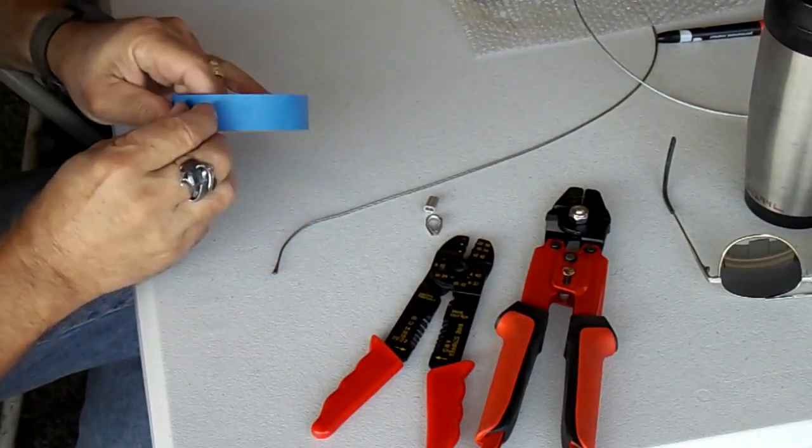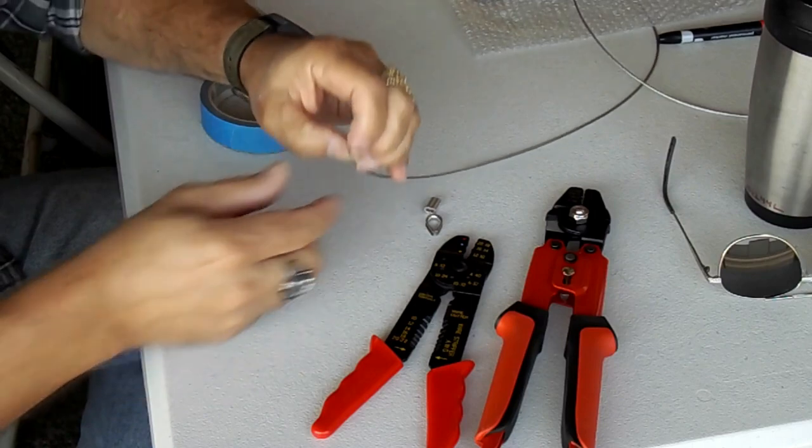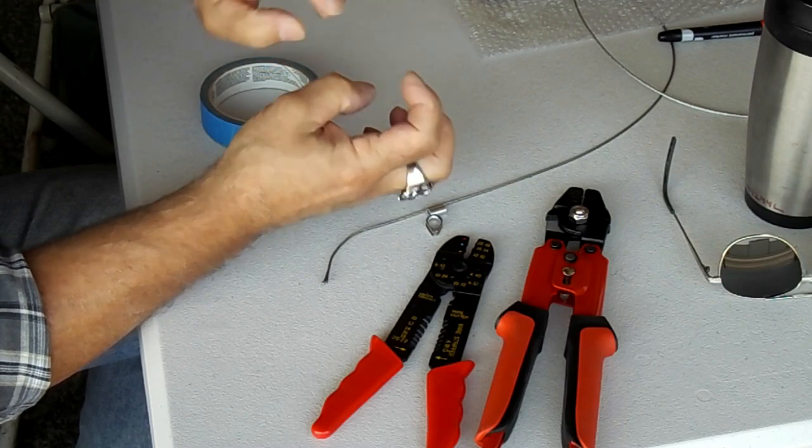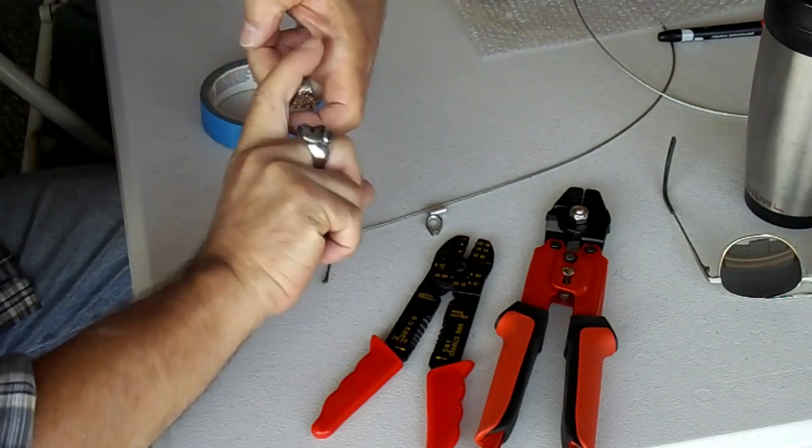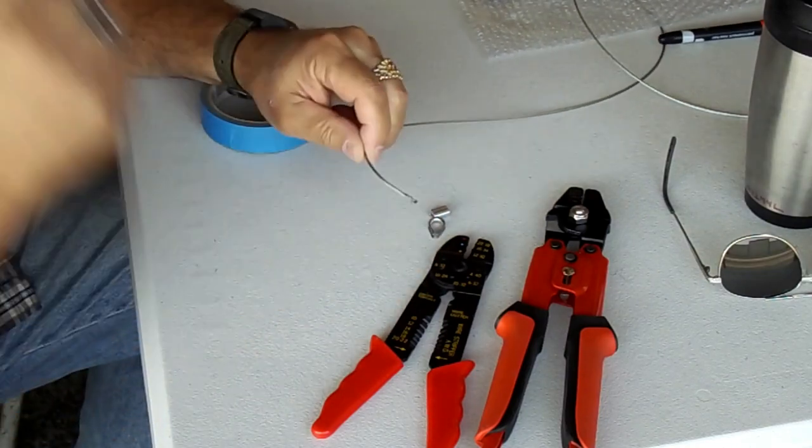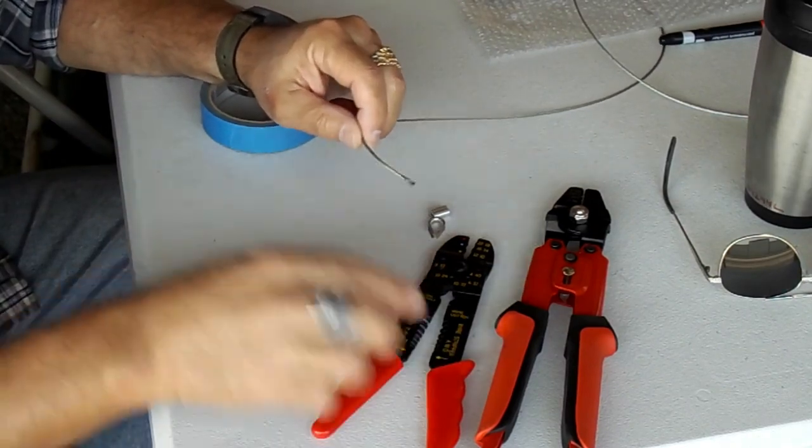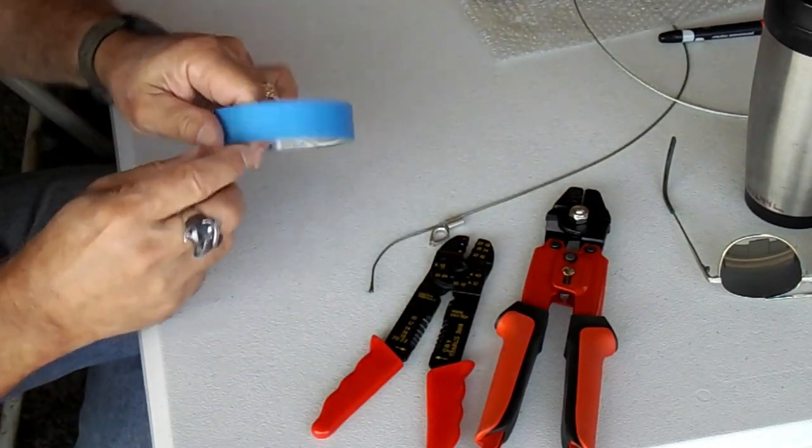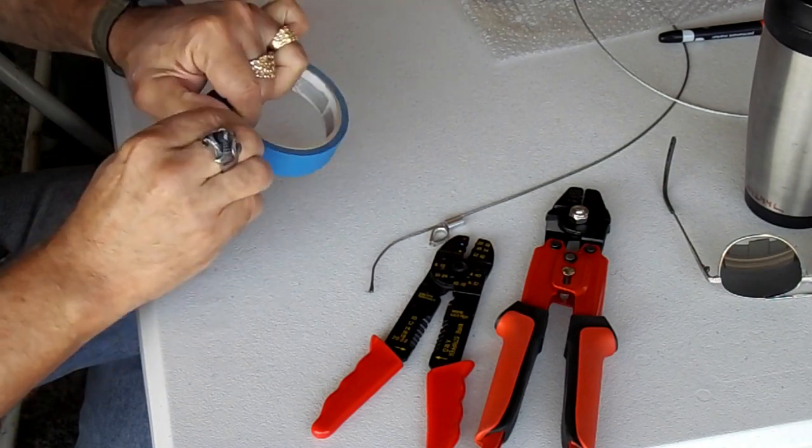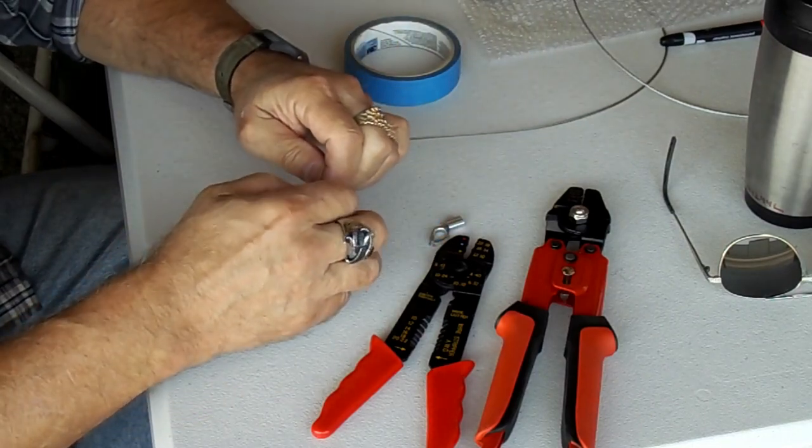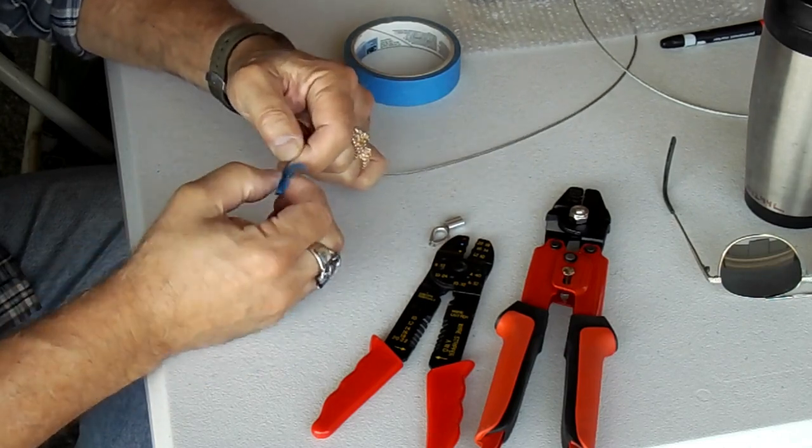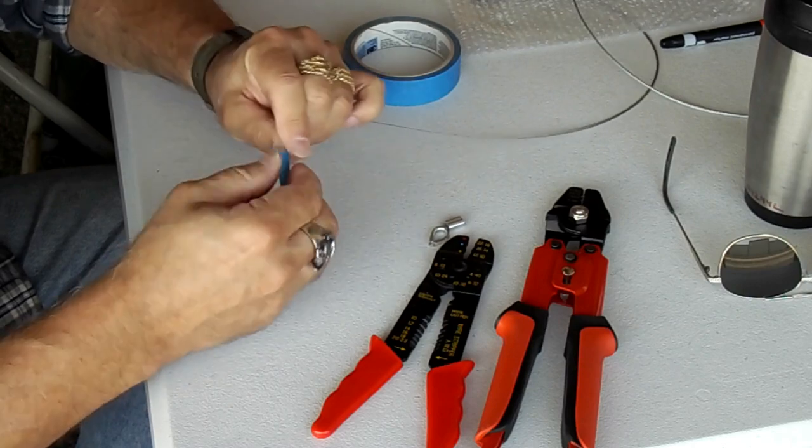So what I do, because these ends tend to fray if you don't have a special cable cutter, an older aviation guy told me to take a little bit of tape and just surround the place you're going to cut. And it helps to keep the cut from fraying.